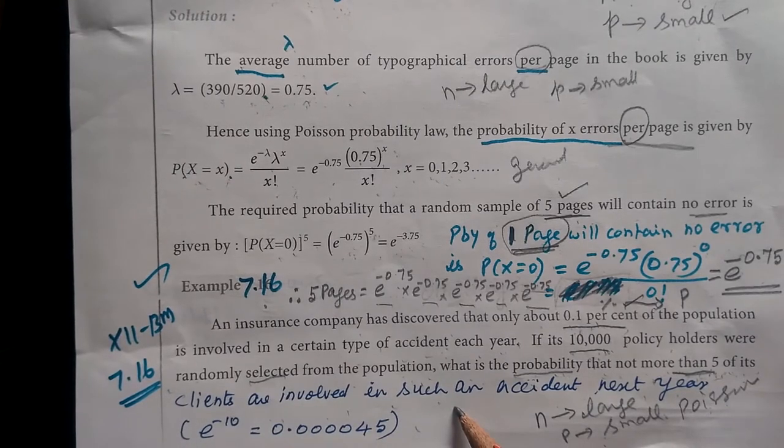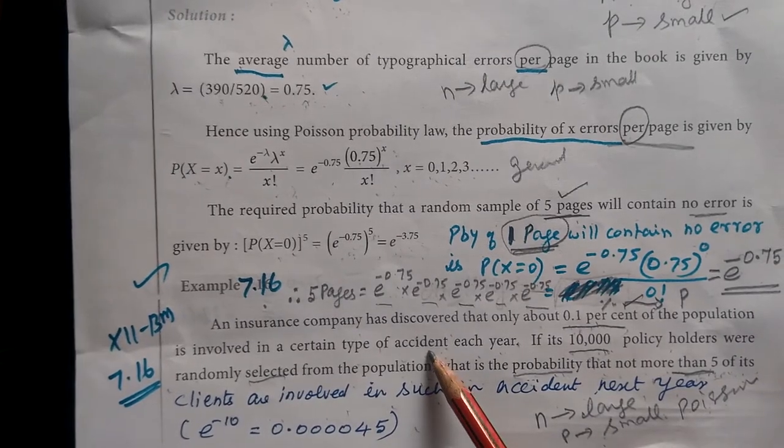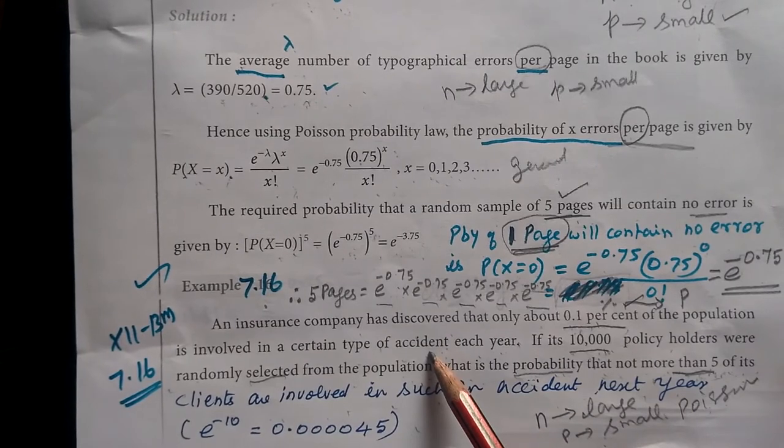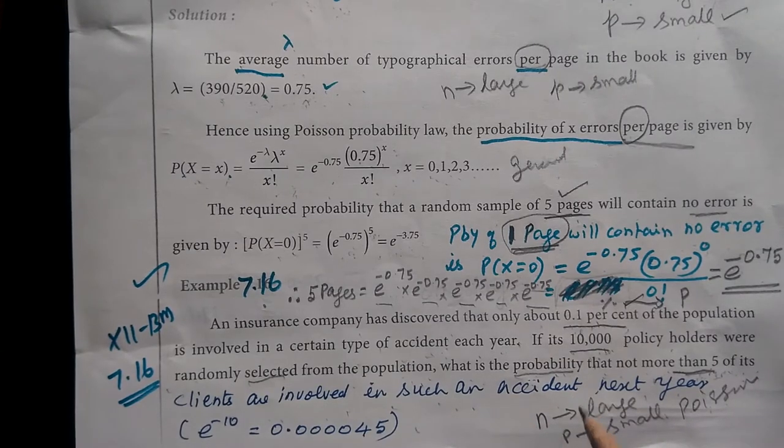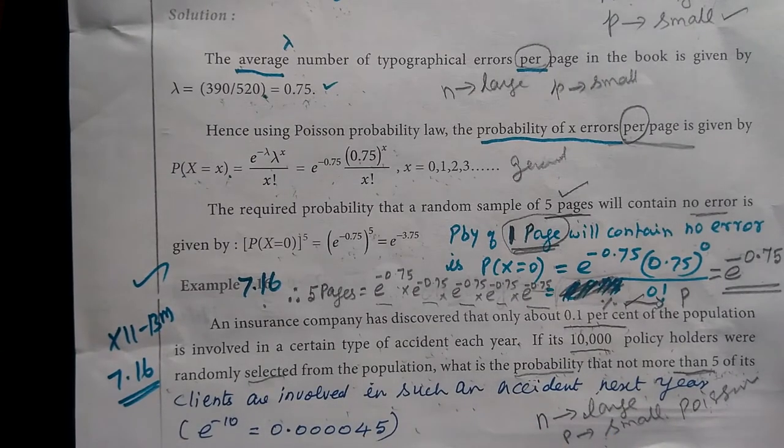If there is a certain accident every year, then next year not more than 5 of the clients. If there is a certain accident in 5 of the clients, then the probability will change.